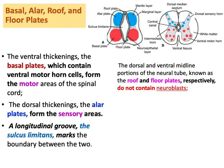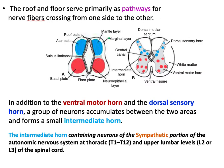The floor plate and roof plate are the dorsal and ventral midline areas of the neural tube. They do not contain neuroblasts. Instead, they serve as pathways for nerve fibers crossing from one side to the other — right to left and vice versa.